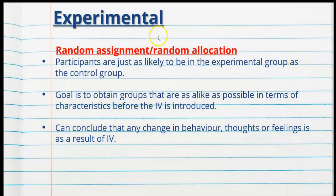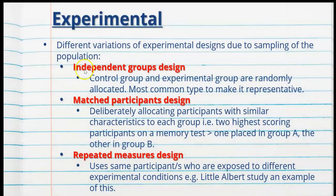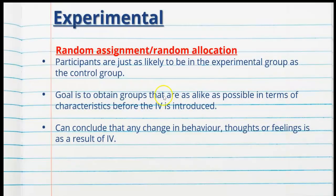Another unique characteristic of an experimental design is random assignment or random allocation — both terms are correct and both are unique to the independent groups design. Participants are just as likely to end up in the experimental group as the control group. The goal is to obtain groups that are as alike as possible in terms of characteristics before the independent variable is introduced, which reduces extraneous variables. If our groups are equivalent, we can conclude that any change in behaviour, thoughts, or feelings is a result of the IV.